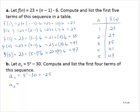a sub 2 would be 5 to the second power minus 30, so that's 25 minus 30, which is negative 5. a sub 3 would be 5 to the third power minus 30, that's 125 minus 30, which is 95. And a sub 4 would be 5 to the fourth power minus 30, and that's 625 minus 30, which is 595.